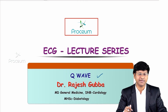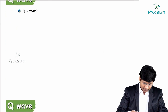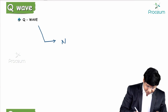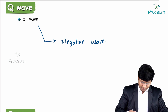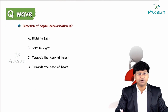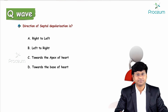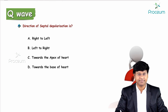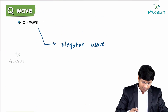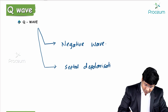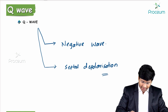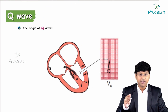Why is the Q wave a negative complex? The Q wave is formed due to septal depolarization. The direction of septal depolarization is from right to left, left to right, towards the apex of the heart, towards the base of the heart.